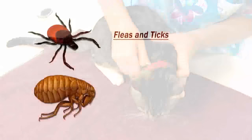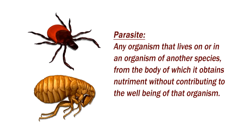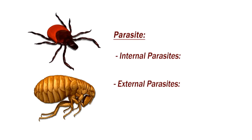Every year, flea and tick problems with pets rank among the highest issues in veterinary hospitals. Both fleas and ticks are considered parasites that feed on the blood of their host and transmit a number of serious diseases. A parasite is any organism that lives on or in an organism of another species, from the body of which it obtains nutriment without contributing to the well-being of that organism. Parasites can be grouped in two categories: internal parasites and external parasites.